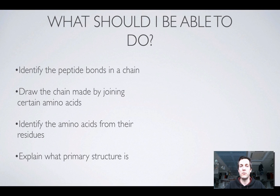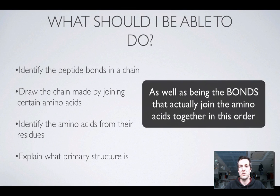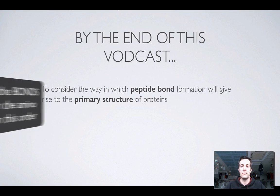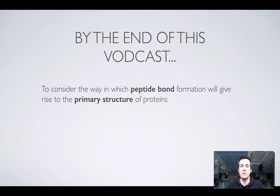We can explain what the primary structure of a protein is. So if we were asked what bonds give rise to the primary structure of a protein, we'd say amide or peptide bonds, because the primary structure of the protein is the order in which amino acids are joined. Hopefully by now you can see how peptide bond formation gives rise to the primary structure of proteins. We're going to have a look at secondary structure next. Hopefully this one made sense — if you've got any questions or comments, please feel free to come and see me or to post a comment on YouTube.